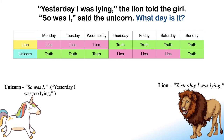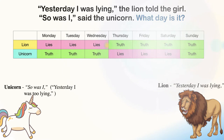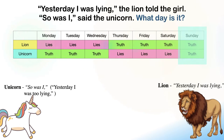If it were Sunday today, then the lion's statement would be a lie, as the lion tells truth on Saturdays. But as per the data, both must be telling the truth on Sundays. So it can't be Sunday today. For all other days, one must be telling the truth and the other must be lying.